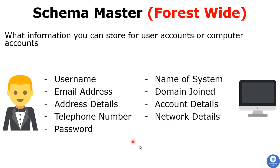In Active Directory, you can create group policies or security policies that grant access to secure devices in your organization. To grant access, you add users to that group policy so they can access certain devices, networks, or computers. To remove access, you simply remove those users from the group, and they will no longer be able to access the secured resources.